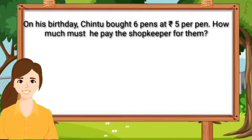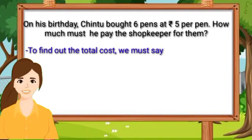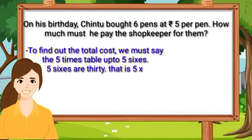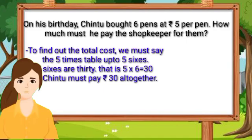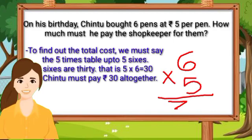On his birthday, Chintu bought 6 pens at rupees 5 per pen. How much must he pay the shopkeeper for them? Chintu bought 6 pens, and each pen costs 5 rupees. To find out the total cost, we must say the 5 times table up to 5 sixes. Let's count: 5 sixes are 30, that is 5 into 6 or 5 multiplied by 6 is equal to 30.